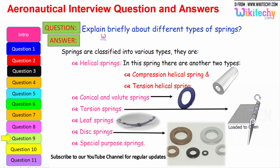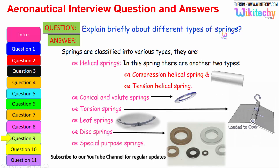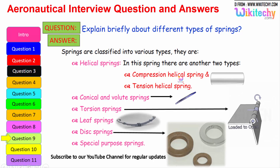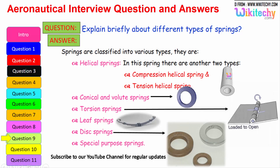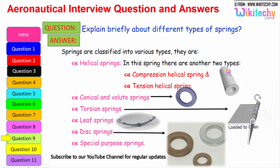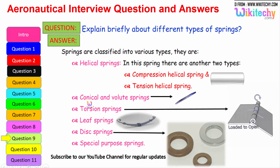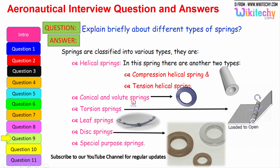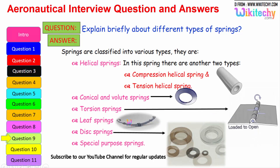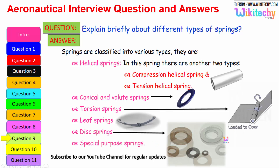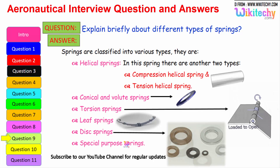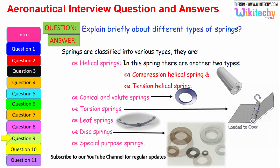Now let us see briefly the different types of springs. Springs are classified into various types: helical springs — which are further divided into compression helical springs and tension helical springs; conical springs; torsion springs; leaf springs; disk springs; and special purpose springs.